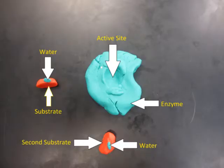In dehydration, two substrates enter the active site, and a water molecule is removed between the two to bind them together. Then the single product leaves the active site, and two more substrates come in.